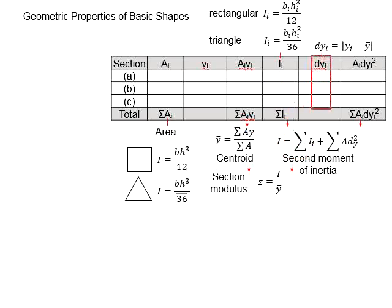Next, you need to determine the DY for each part of the members. DY is actually the distance between the centroid of the parts and the centroid of the member, as given in the formula here.